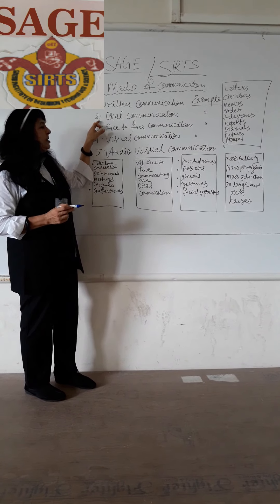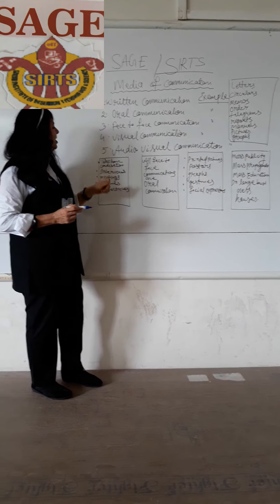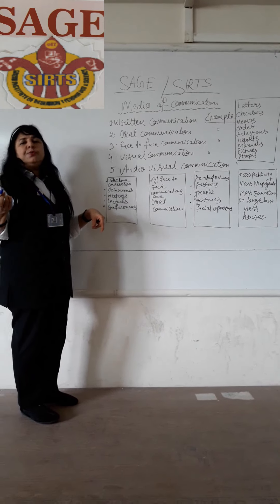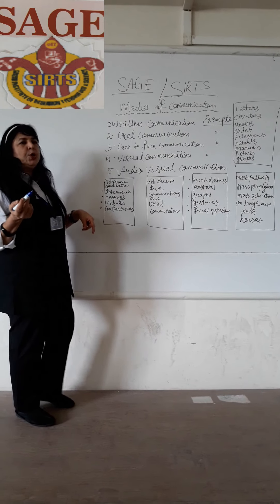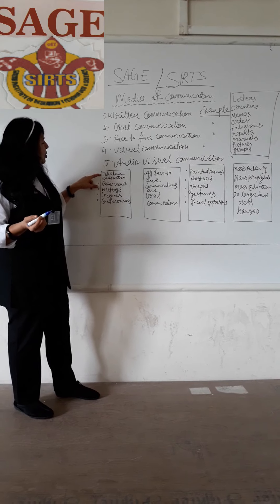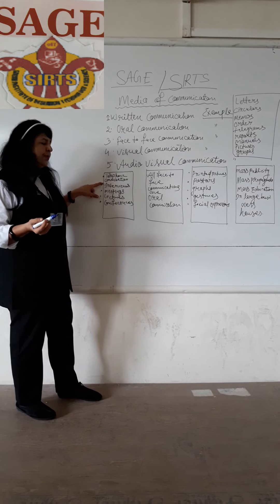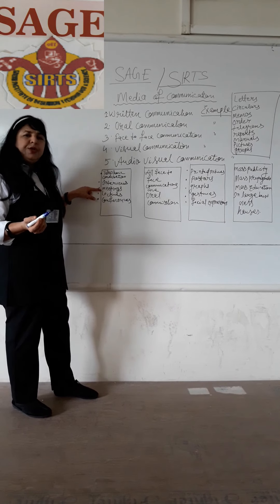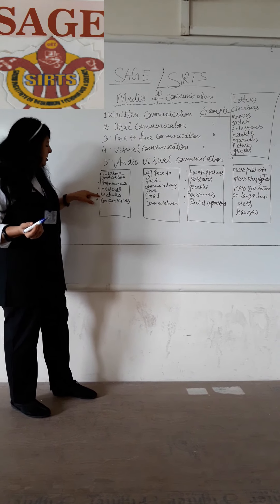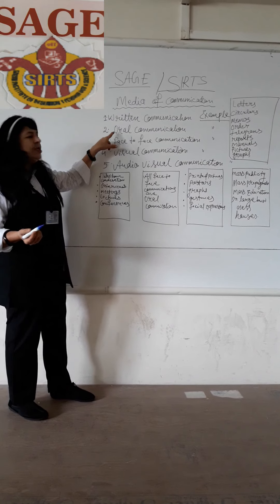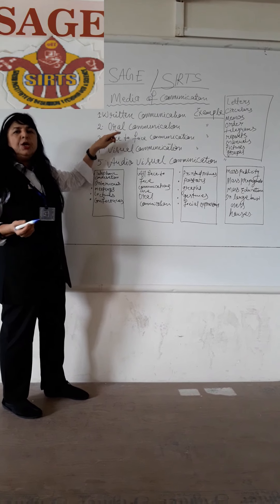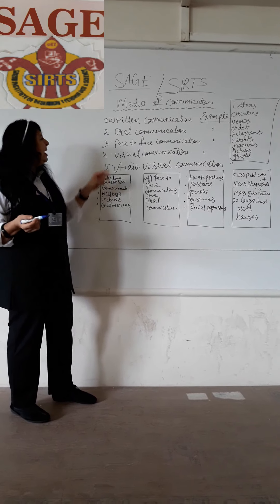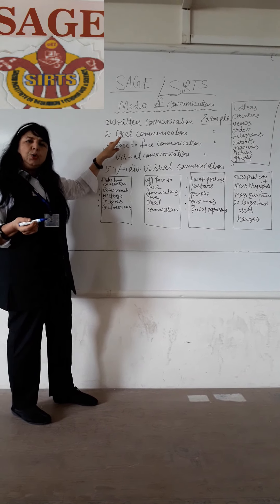The second type is oral communication. Oral communication means whenever we have a conversation with our friends, relatives, or parents, at that time we use the telephone, interviews, meetings, lectures, and conferences. We listen to oral communication, and the speaker using this media is also engaging in oral communication.